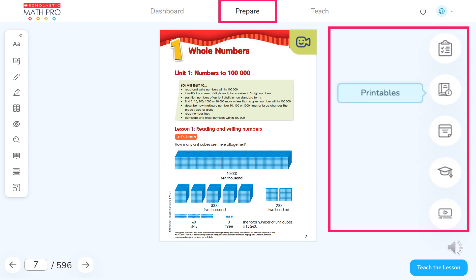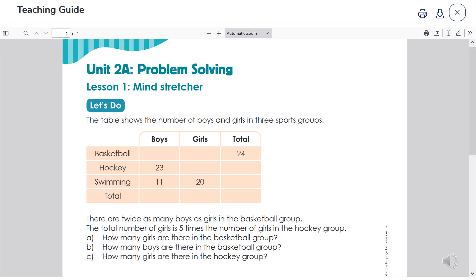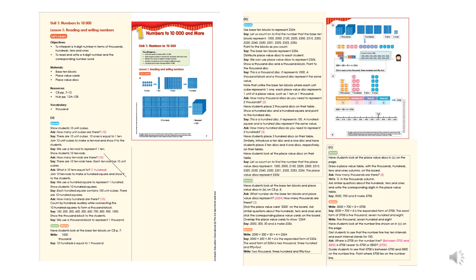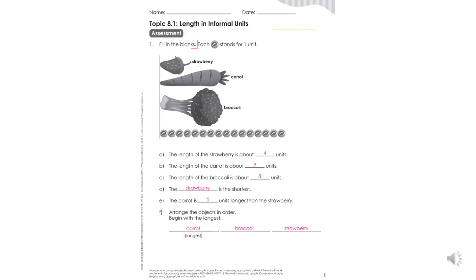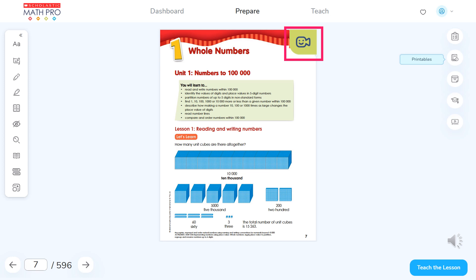On the right-hand side of the prepare page is a menu that includes access to the topic overview, printable resources such as more practice, and paper and pencil topic assessments. There is also a link to the demonstration lesson videos in the side menu and at the top of the lesson page.